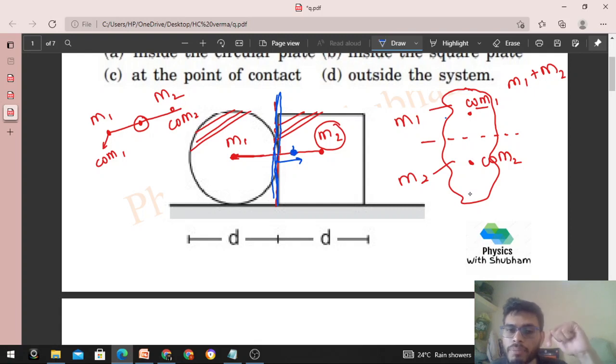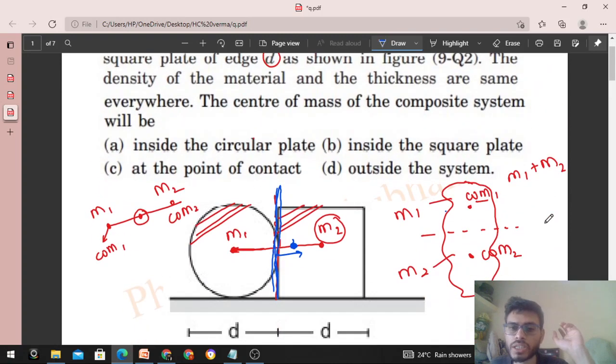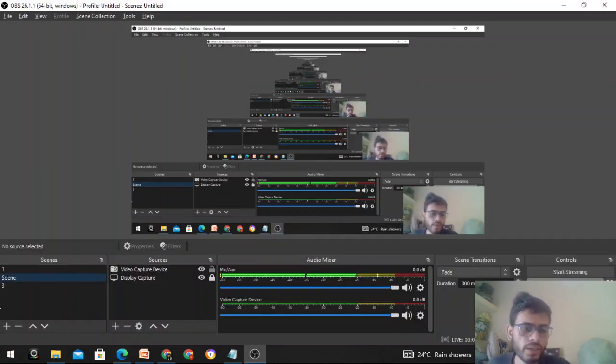Center of mass square plate mein aagaya. So inside the square plate will be the position of center of mass of this combined system. Fine. So I think it's clear. Let me know if you have confusion. Okay guys, keep working out, best of luck, bye.